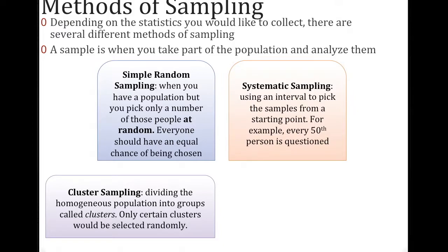Systematic sampling is when you use an interval to pick the samples from a starting point. So for example, every 50th person questioned, or every 5th person who walks into my store, I'm going to give them a survey. That's systematic.